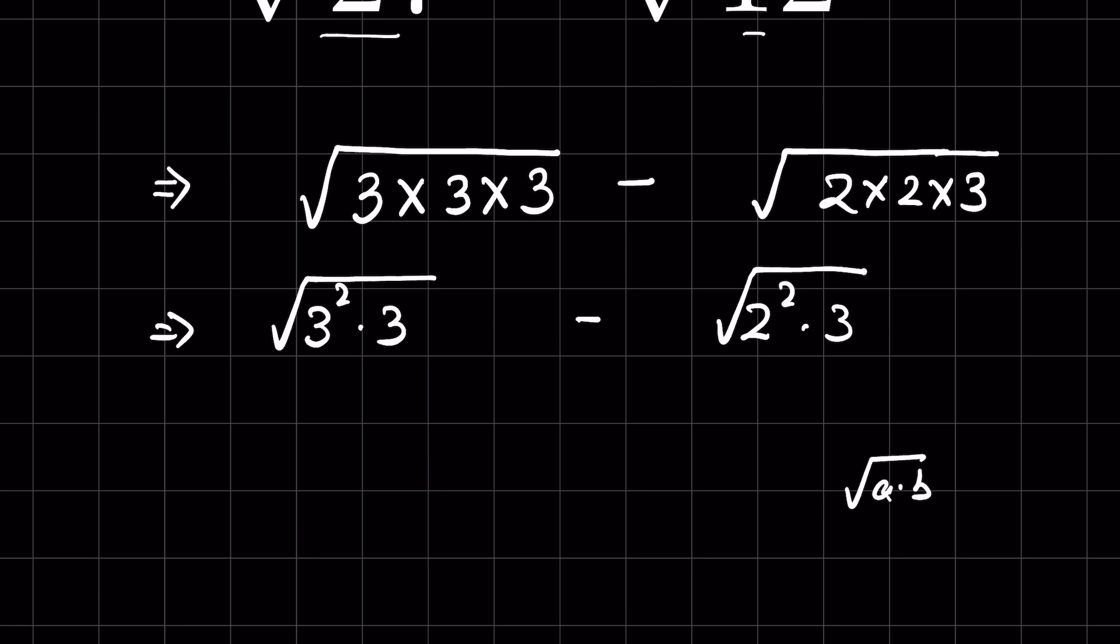Now when a times b is under square root this we can also write it as square root of a times square root of b. So therefore here we can write square root of 3 square times square root of 3 and this as square root of 2 square times square root of 3.